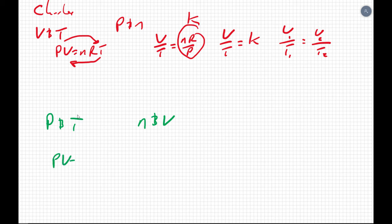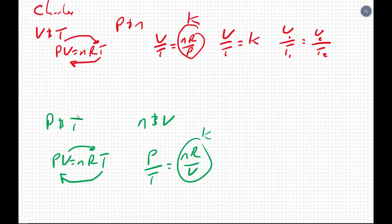So PV equals nRT. Pressure and temperature were our variables. Let's put them on one side of the equation. Volume and amount, let's put them with the constant. So I get P over T equals nR over V. All of these are constant.